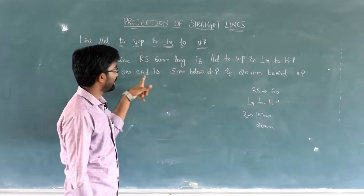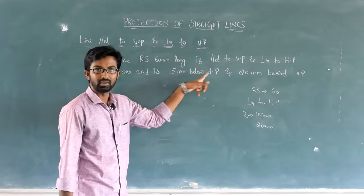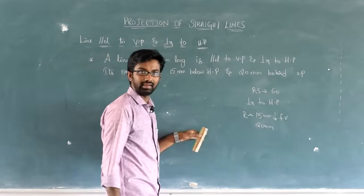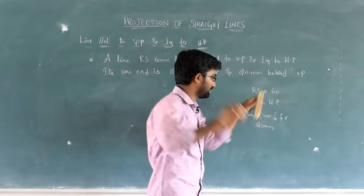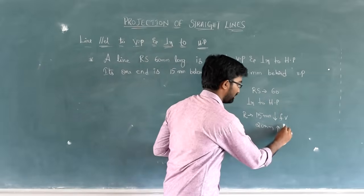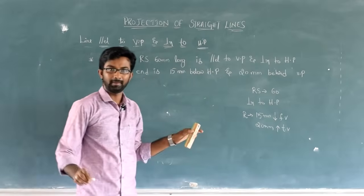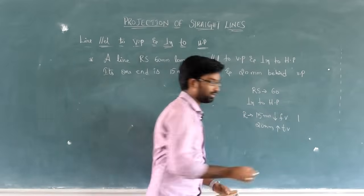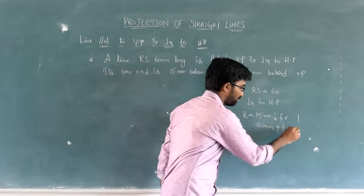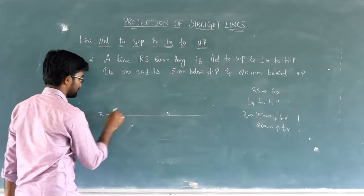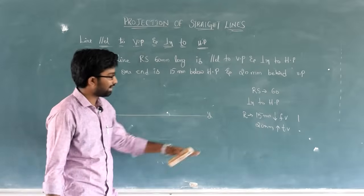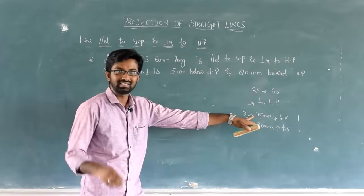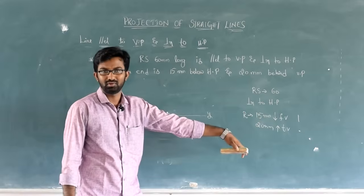This is the slight change in the question. R, its one end is 15 mm below HP - below means downward. HP is front view. Then next 20 mm behind means upward. VP is top view.